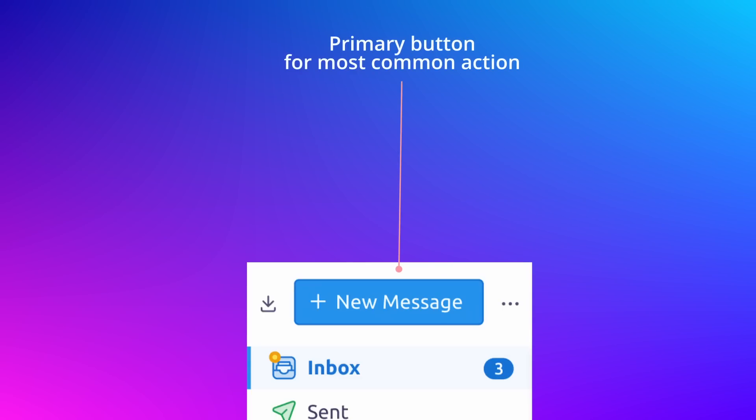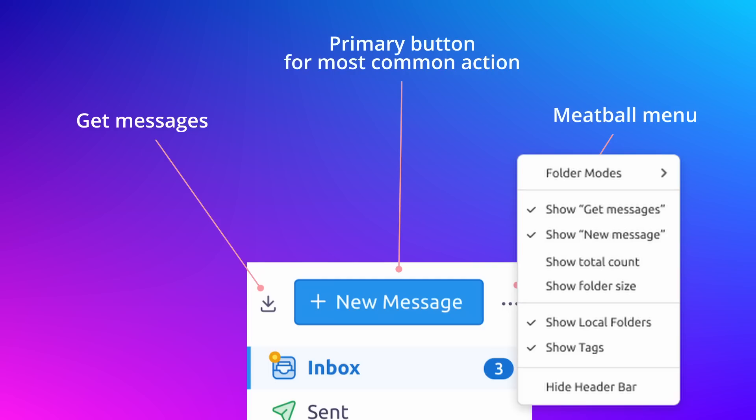In the same area we also added a button to fetch messages from the server — the common 'get messages' button from the current toolbar. At the end of the area we added a meatball menu — it's called a meatball menu, it's super cute — that allows users to access options to change the layout of the folder pane, switching folder modes, showing or hiding local folders and tags, and many more options that would normally be hidden inside a submenu of the menu bar. Not all users use the menu bar — some hide it completely — so burying all those options there isn't very discoverable. If you don't care about this at all and hate the wasted space, you can click hide and that preference will be remembered forever in your profile.